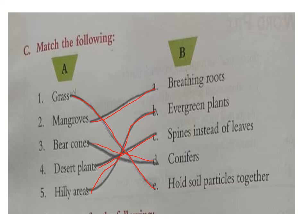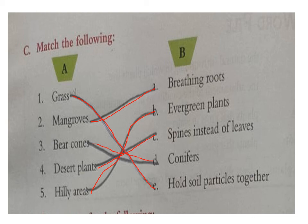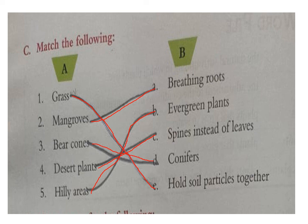Now Section C — match the following. You can match by putting numbers or by drawing a line. Grass holds soil particles together — match with E. Mangroves have breathing roots — match with A. Conifer plants bear cones — match with D. Desert plants have spines instead of leaves — leaves are modified into spines. Fifth: hilly areas — evergreen plants.